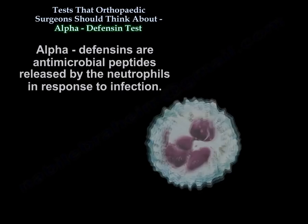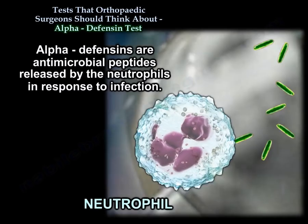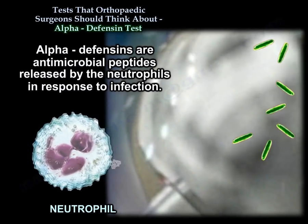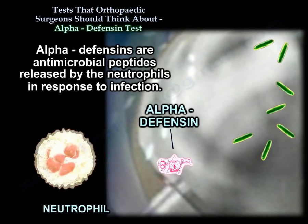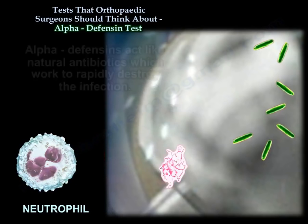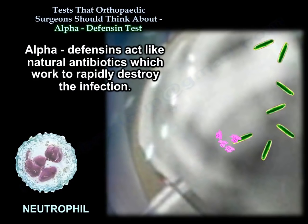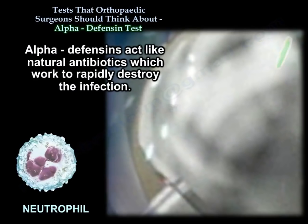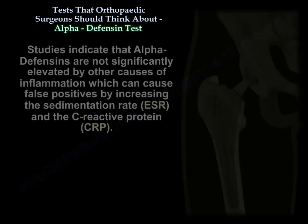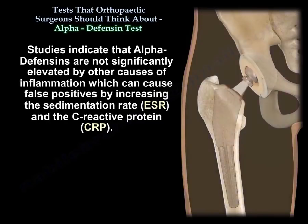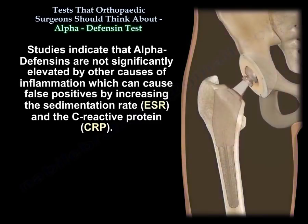Alpha-Defensins are antimicrobial peptides released by the neutrophils in response to infection. The Alpha-Defensins act like natural antibiotics which work to rapidly destroy the infection. Studies indicate that Alpha-Defensins are not significantly elevated by other causes of inflammation, which can cause false positives by increasing the sedimentation rate and the CRP.